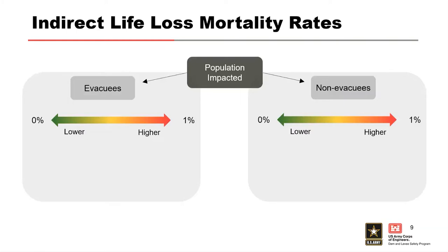As we dug into the data, data availability is really a challenge. For direct life loss estimates in LifeSim, population at risk is clear — it's all the people that could get wet for a given flood event. But for indirect life loss it's much less clear, because people well outside your disaster area or flood zone could be negatively impacted by that flood. Trying to figure out how many additional people might be impacted, and getting that data from past events, is quite a challenge.